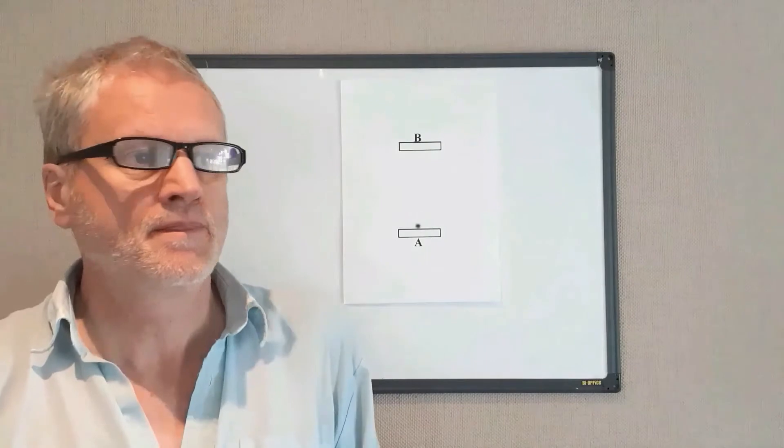The distance of the vertical beam is c times tau. That's the proper time. The distance of the diagonal beam is ct. And the distance on the bottom is vt.